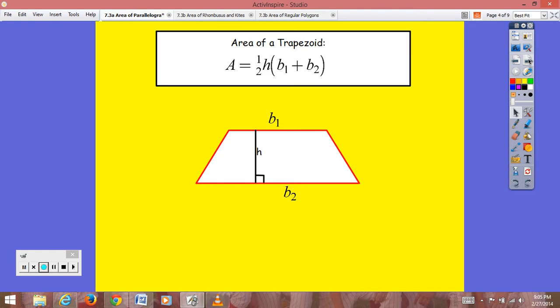The area of a trapezoid is one half of your height times the sum of your base one plus base two, and that's where you distinguish your two bases. And again, the height has to be perpendicular to your bases.